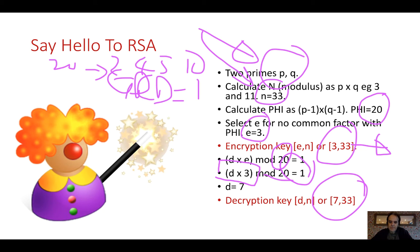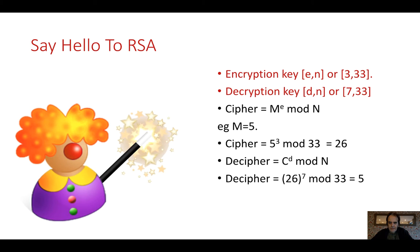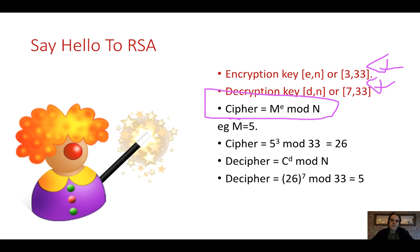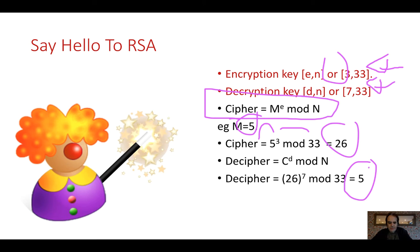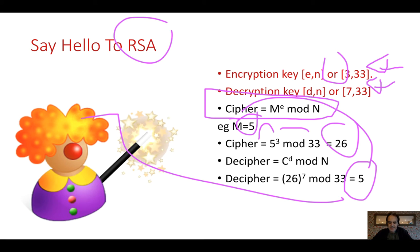Our encryption key is 3 and 33, our public key that we can distribute. Our decryption key is 7 and 33. The cipher is created by taking the message raised to the power of E, then mod N. For M equals 5: 5 to the power of 3, mod 33, gives us 26. When we decipher, we take 26, raise it to the power of D, and take mod N — and that's the magic of RSA, the method typically used to protect our identity online.